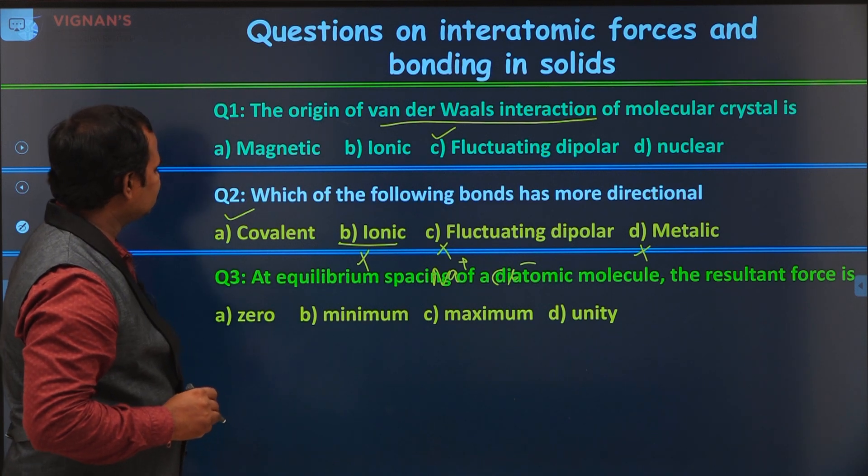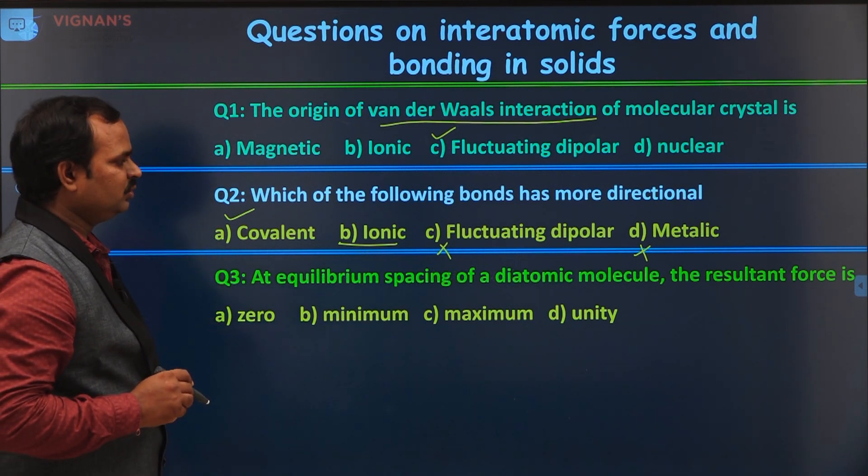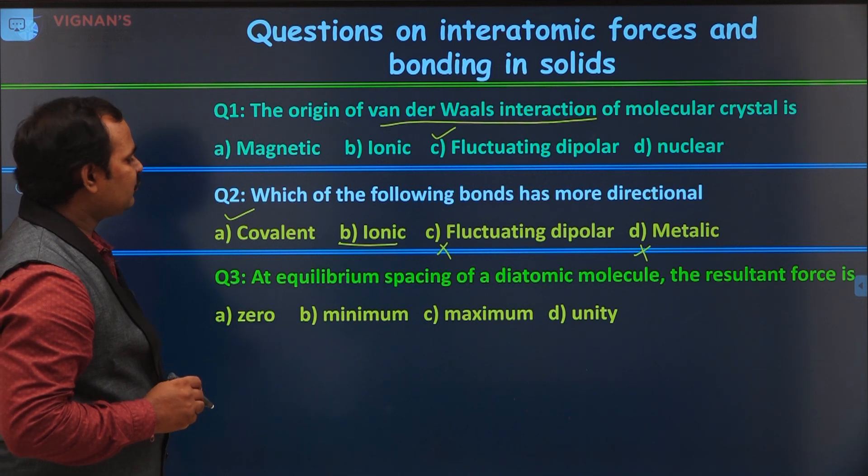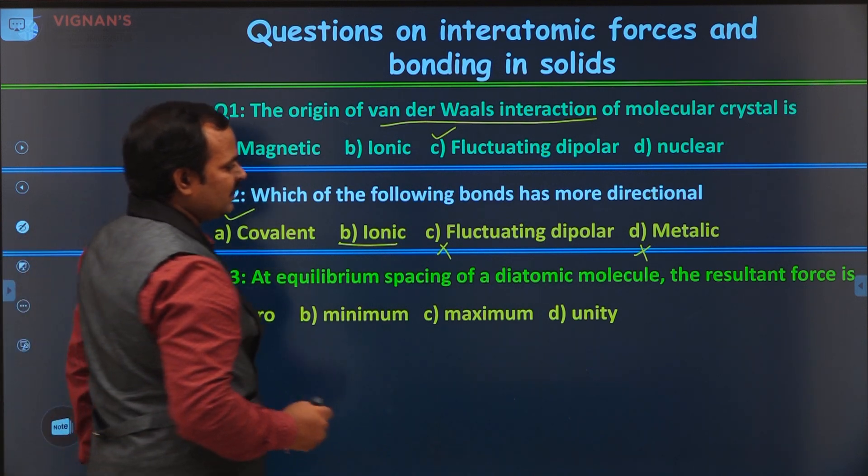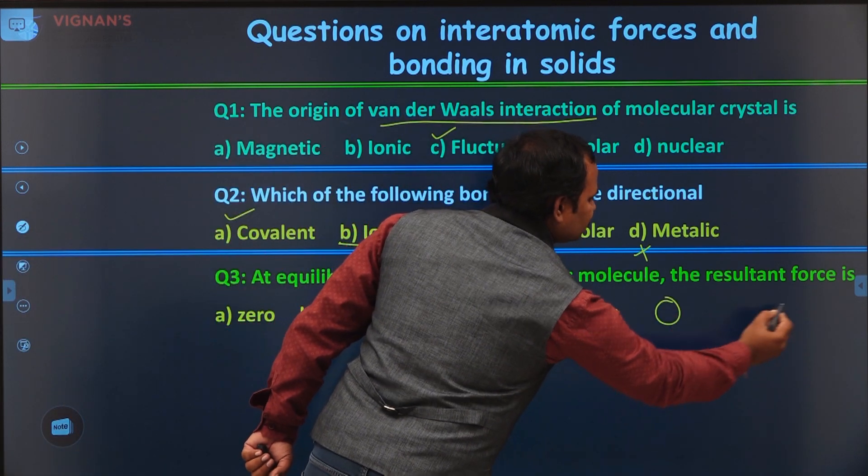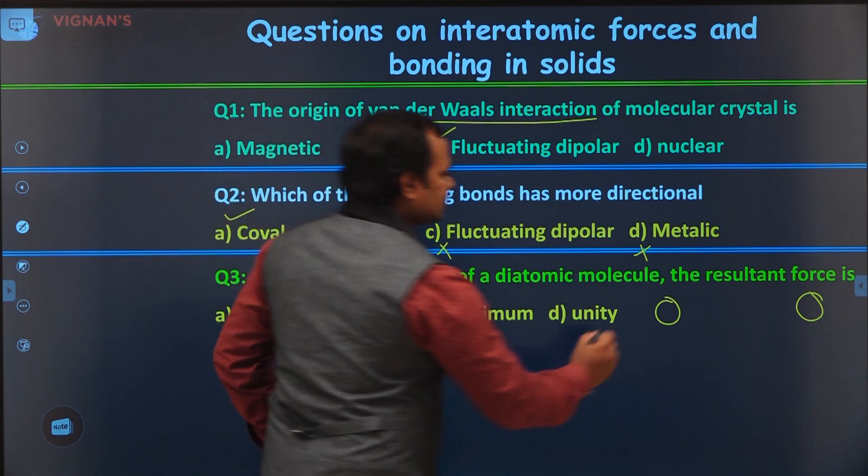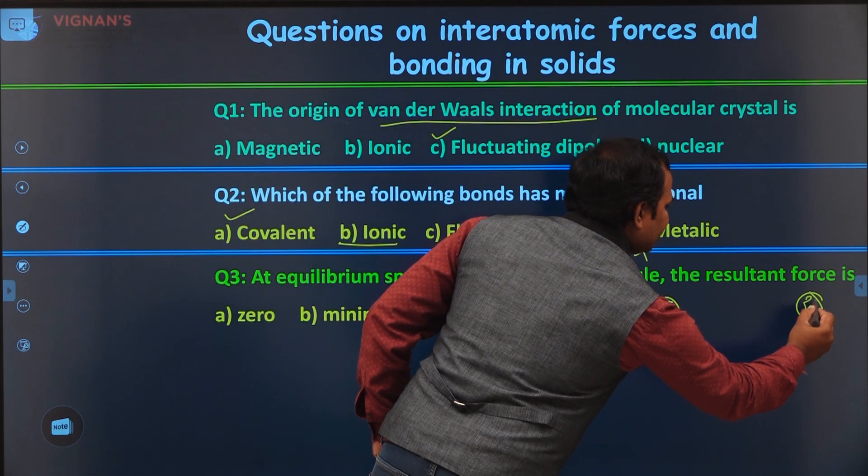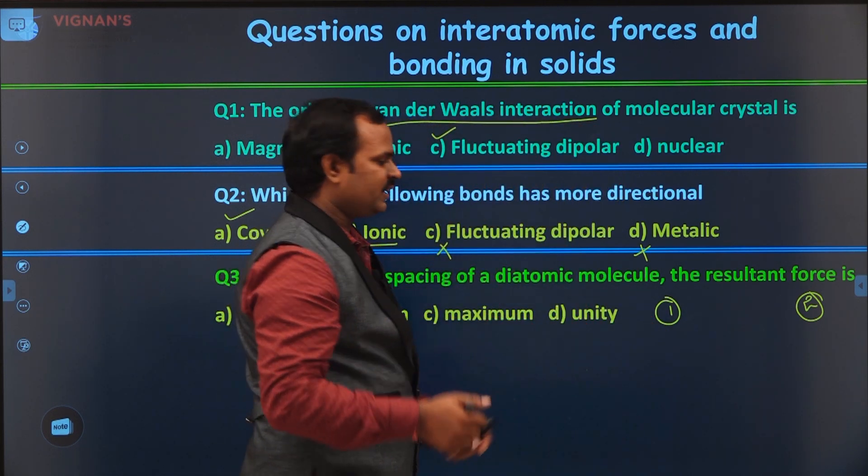The third question is, at equilibrium spacing of a diatomic molecule, the resultant force is. This is related to interatomic forces. We know that when the two atoms are at far distance, there won't be any interaction. This is the first atom. This is the second atom. When the second atom is approaching the first atom, initially we have a force of attraction.